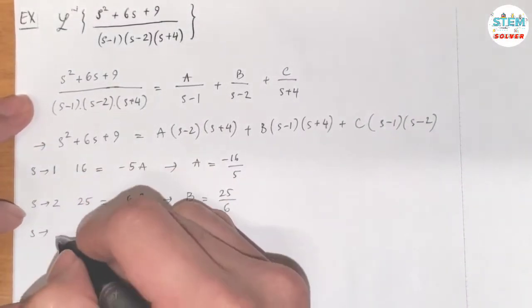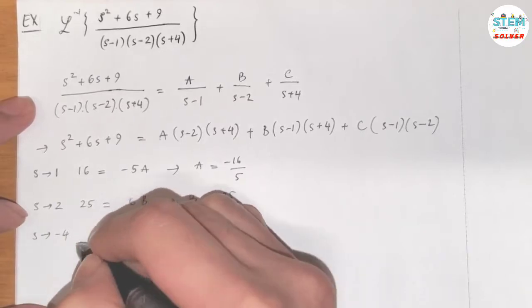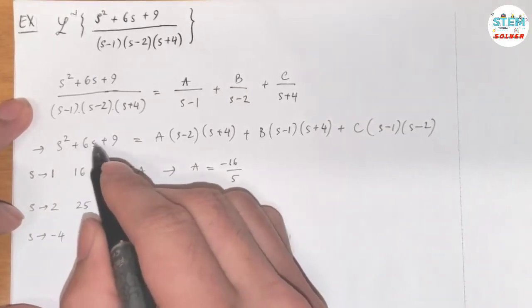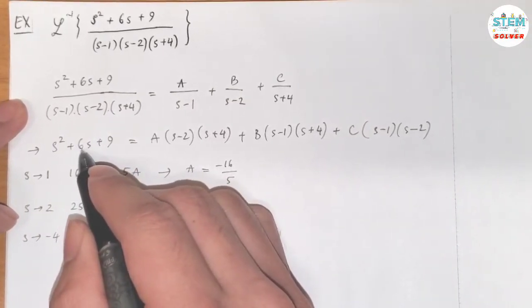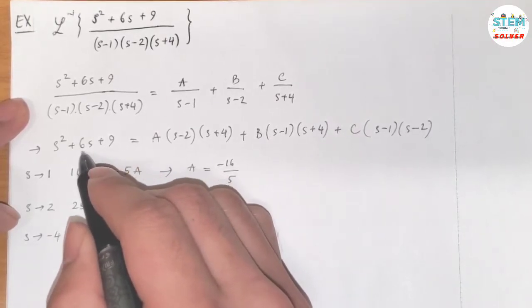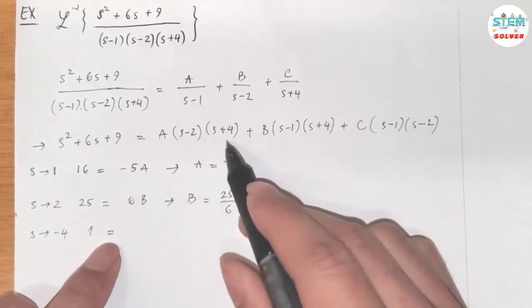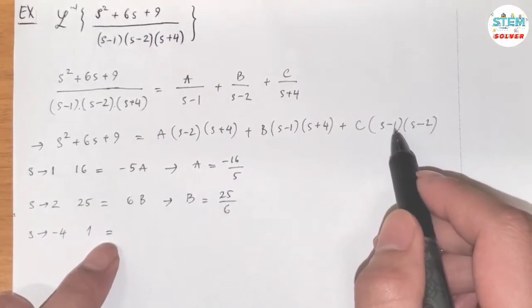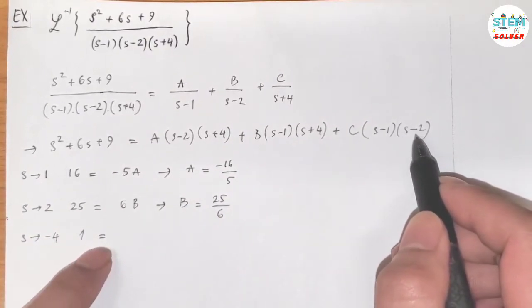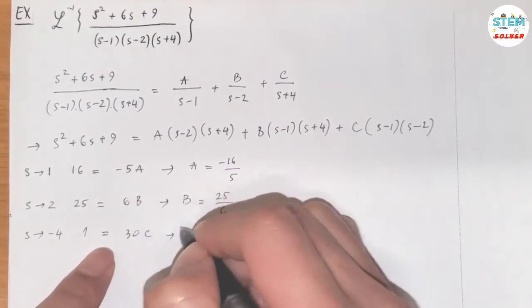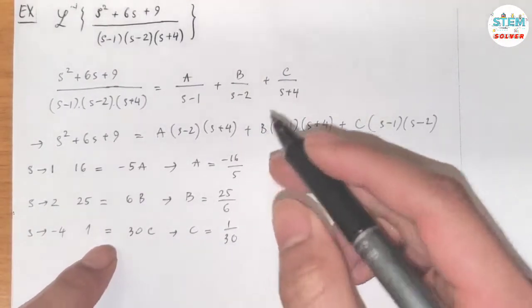Now do the same thing. Let x approach negative 4. On the left side, we have negative 4 squared, 16, plus 16 plus 9, 25 minus 24, which gives me 1. For negative 4, this is gone. Negative 4 minus 1 is negative 5, times negative 6 is 30. So I get C equals 1 over 30.